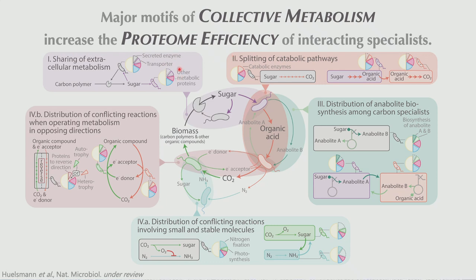In the first type of motif, this occurs whenever a part of metabolism happens extracellularly — for example, the degradation of chitin. Microbes can specialize in the sense that they do not produce the enzyme to break down a polymer, but they can still take up the product. Some people would call this cheating. They are more proteome efficient simply because they're not producing this enzyme. But that means they require another cell to do this for them — one way where specialization leads to requiring another microbe.